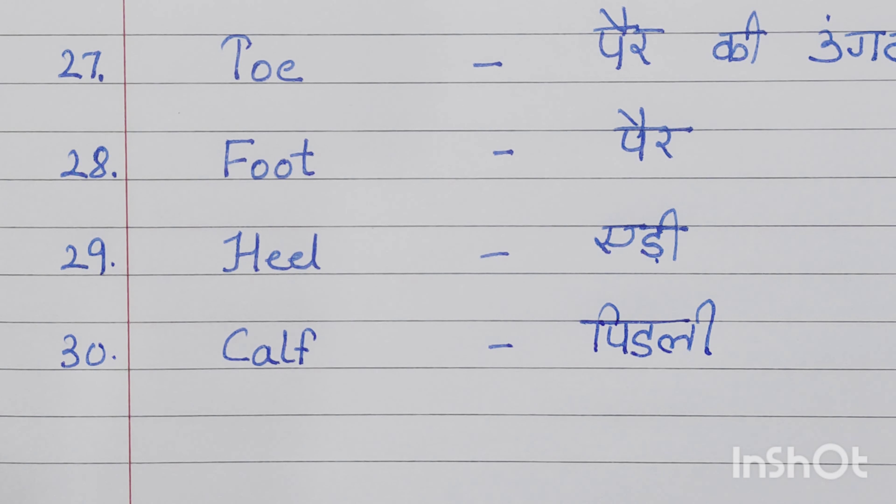Twenty-fifth is knee, K-N-E-E, knee. The K is silent. Knee means ghutna.